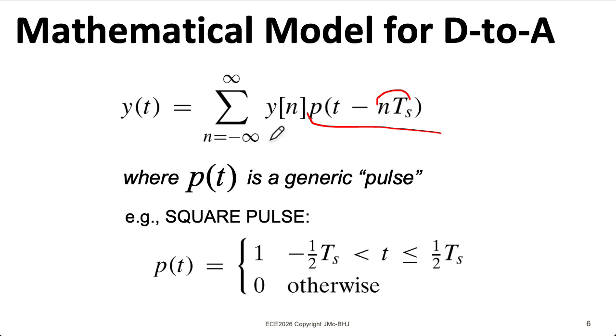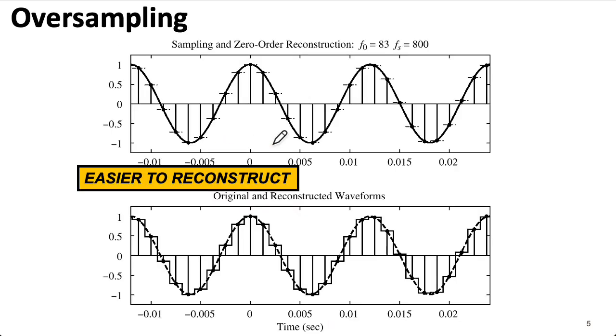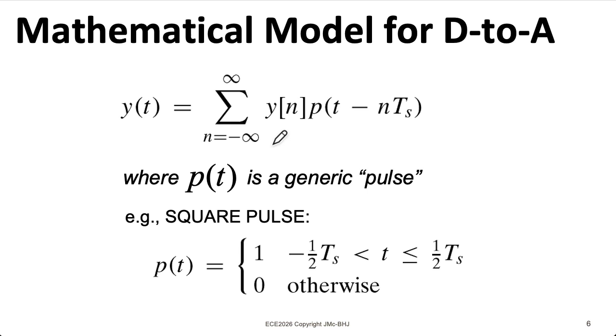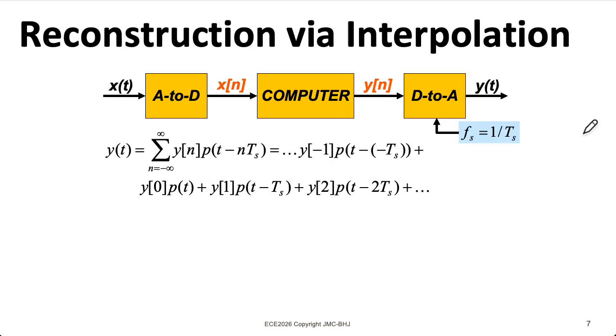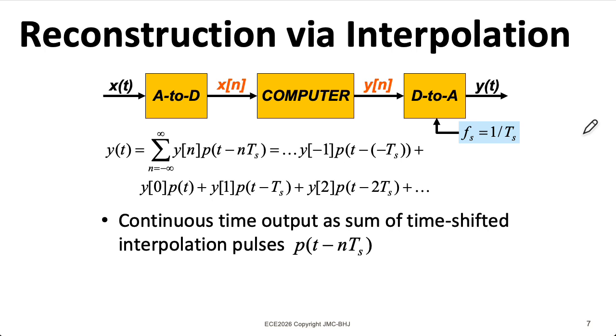And then we're going to weight that pulse by the value of the sample at that point. And then we sum all of those up. So this kind of zero-order hold could be modeled using the square pulse. That's 1 for t between minus capital Ts over 2 and Ts over 2. So our reconstruction consists of a bunch of these time-shifted interpolation pulses, weighted by the sample values and spaced according to the sampling interval.